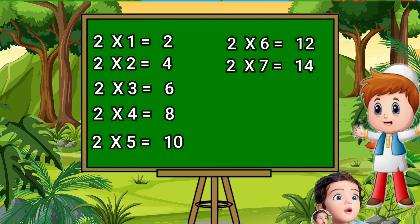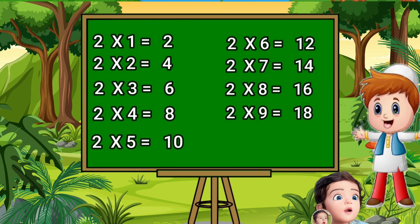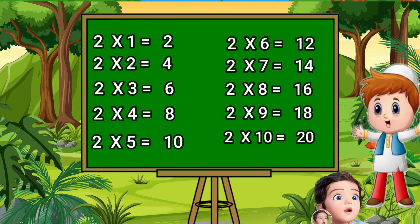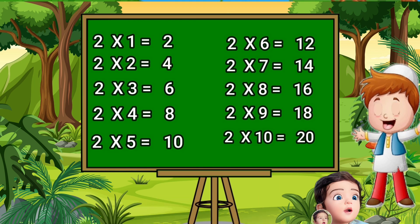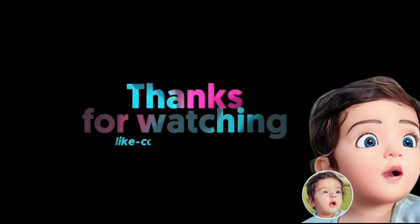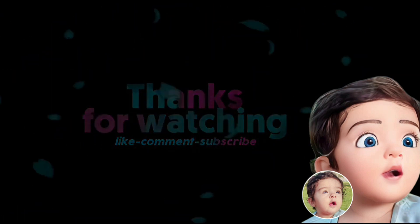Two sevens are fourteen. Two eights are sixteen. Two nines are eighteen. Two tens are twenty.